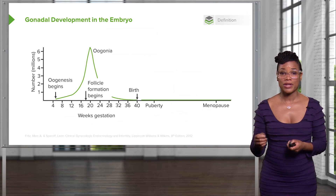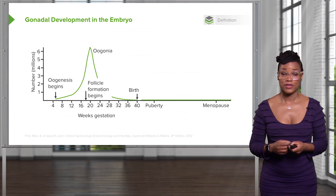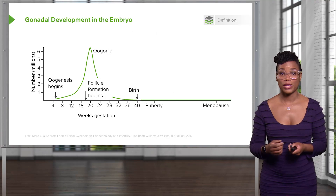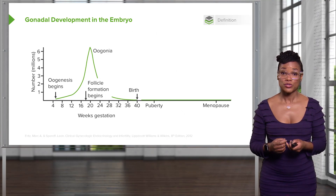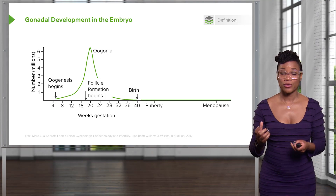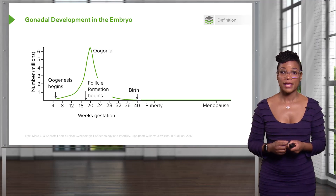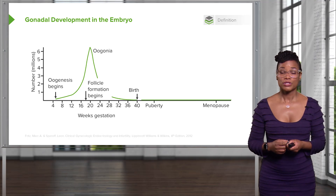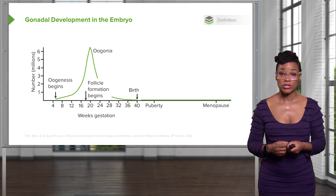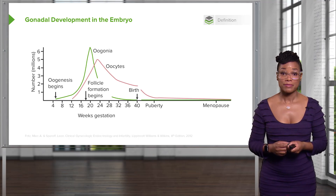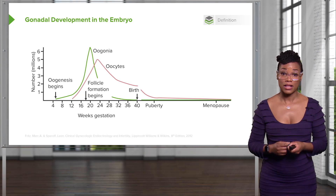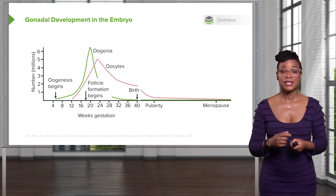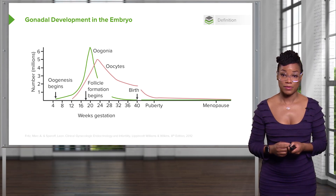In the ovaries of the female, oogenesis occurs. Oogenesis begins around the fourth week of gestational age. Around mid-gestation, around 20 weeks, oogonia — the cells that produce eggs — will begin to make follicles. Those follicles will undergo a process called atresia, or apoptosis, or programmed cell death, which will decrease the number of follicles present, continuing to decrease throughout the life of the female fetus.